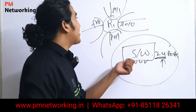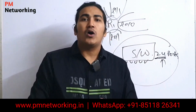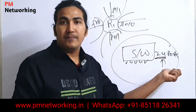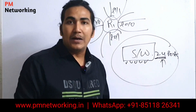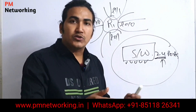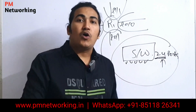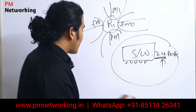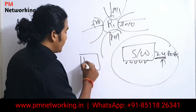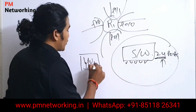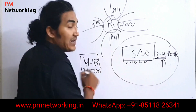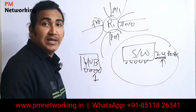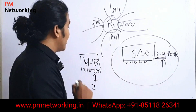Now if I talk about a hub — all ports of a hub belong to the same broadcast domain and all ports of a hub belong to the same collision domain as well. Suppose I have a hub with 24 ports: there is only one broadcast domain and only one collision domain.